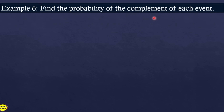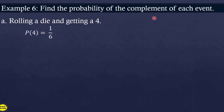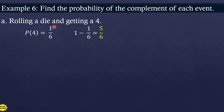Example 6: Find the probability of the complement of each event. First, rolling a die and getting a 4. The probability of getting a 4 is 1/6. To find the complement, subtract from 1: 1 minus 1/6 = 5/6. So the probability of the complement of rolling a 4 is 5/6. Next, selecting a letter of the alphabet and getting a vowel. There are 5 vowels out of 26 letters, so probability = 5/26. The complement is 1 minus 5/26 = 21/26.